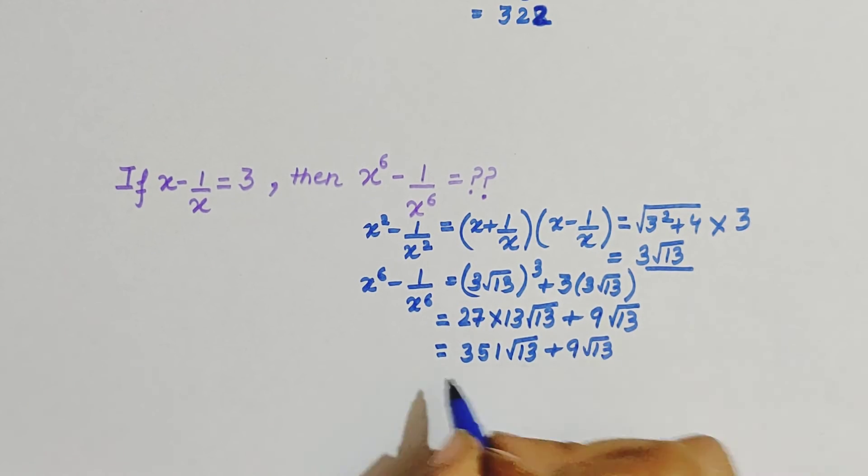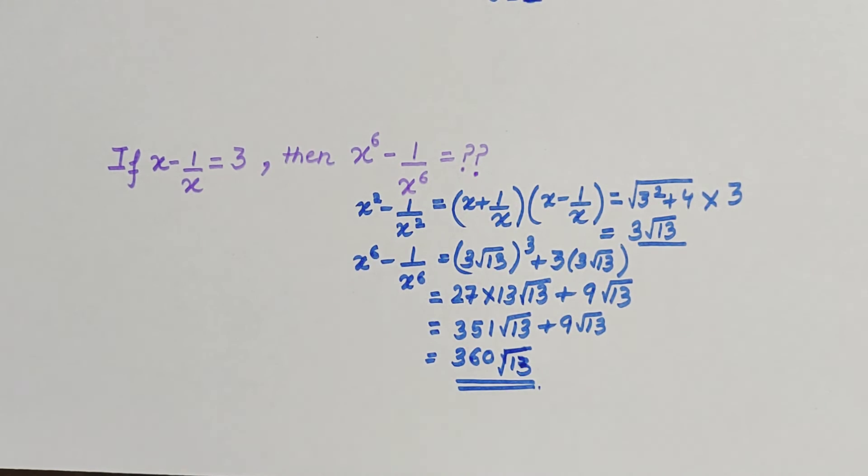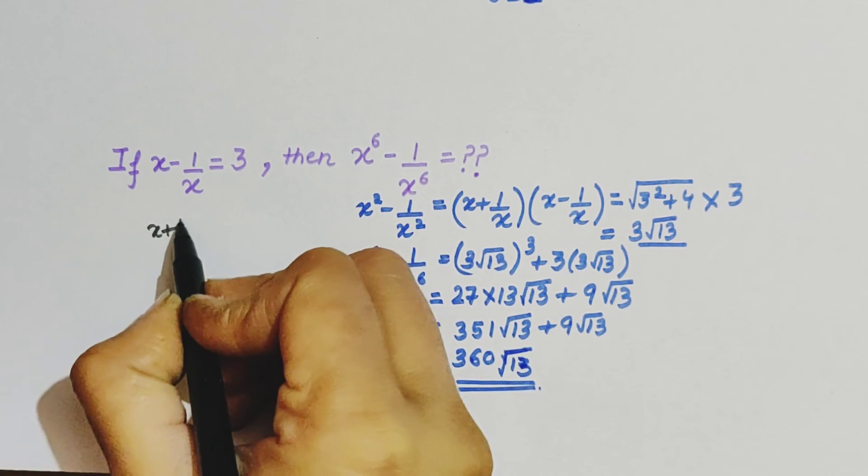And this will be equal to 351 root 13 plus 9 root 13, and this is 360 root 13. But here in the given equation there was a minus sign. If x plus 1 over x...